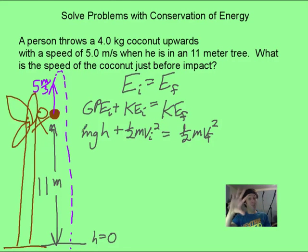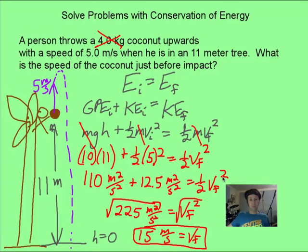Gravitational potential energy can be positive or negative, but for us, if we call down to the ground zero, it can be positive. Now what's nice, if you look, the term that cancels out is mass. So we didn't even need to know the 4 kilograms of the coconut. Now you plug in your values and solve, and then you fill in the numbers, and there you have it. You end up with 15 meters per second.